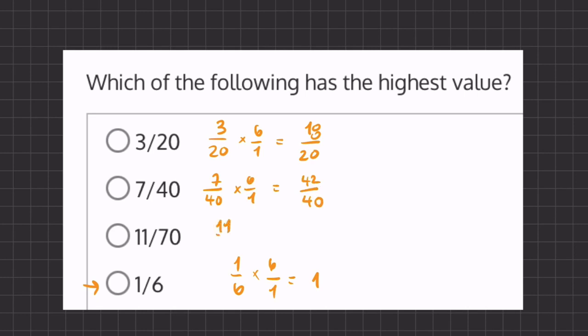And our last one, 11 over 70, and if we multiply this by six over one, we get 66 over 70.